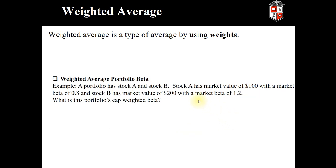We'll look at one last example, only we'll use beta. I have another video on the terminology surrounding beta. If you do not understand what beta is, it will not prevent you from solving this problem. So, a portfolio has stock A and stock B. Stock A has a market value of $100 with a beta of 0.8. Stock B has a market value of $200 with a market beta of 1.2. What is this portfolio's cap weighted beta?